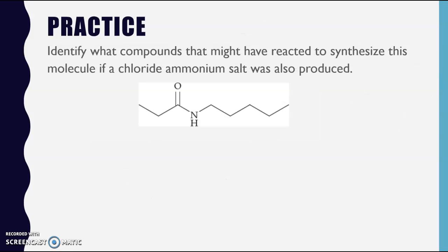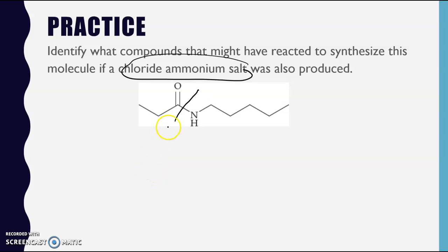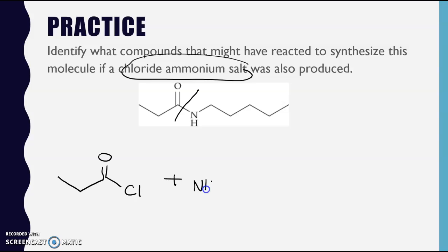For the second question: identify the compounds that might have reacted to synthesize this molecule if a chloride ammonium salt was produced. This is critical - if a chloride ammonium salt was produced, then this had to involve an acid chloride providing the carbonyl portion. I identify the amide linkage to divide up the molecule: the acid chloride comes from this part - it must have been this acid chloride with a chloride attached - and it must have reacted with the amine portion, noting the hydrogen difference.